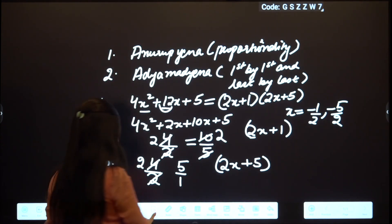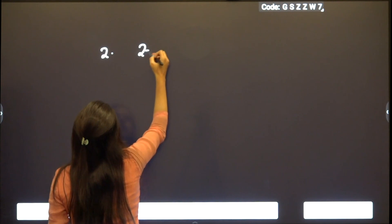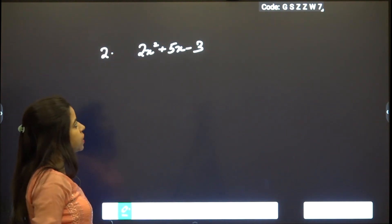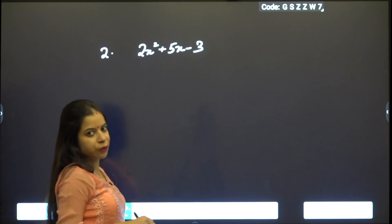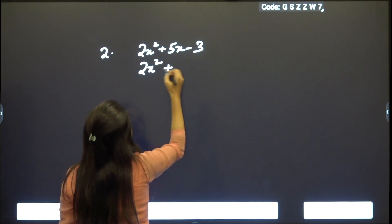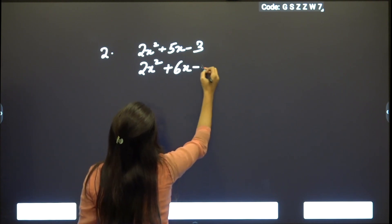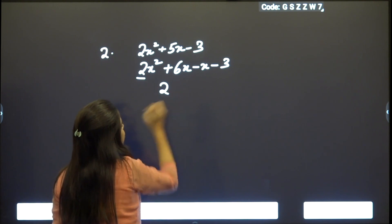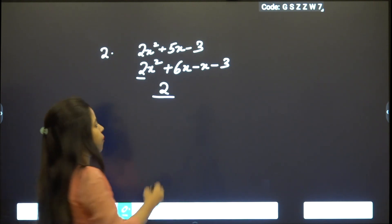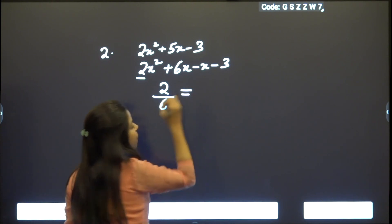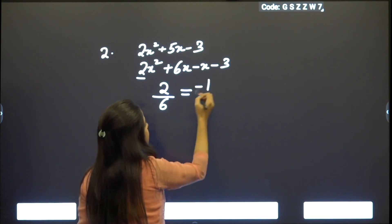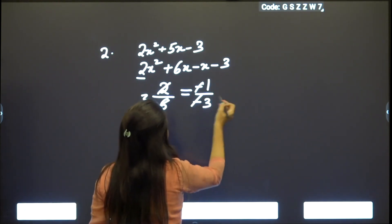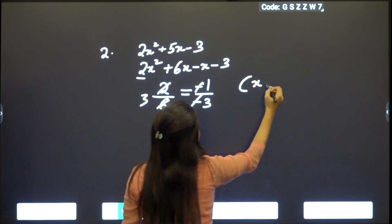Let us take another example: 2x² + 5x − 3. Using Anurupyena, we split 5 as 2x² + 6x − x − 3, such that the ratio of the coefficient of x² (which is 2) to the first coefficient of x (which is 6) equals the second coefficient of x to the constant term. This ratio comes out to be 3, so the first factor is x + 3.